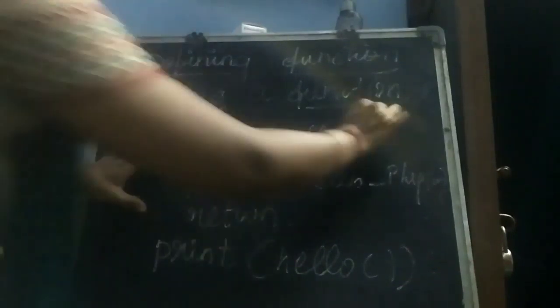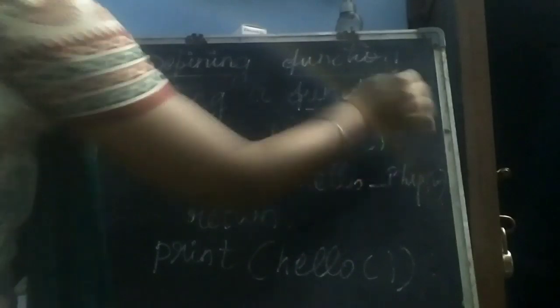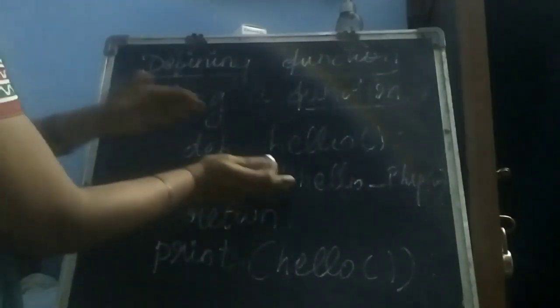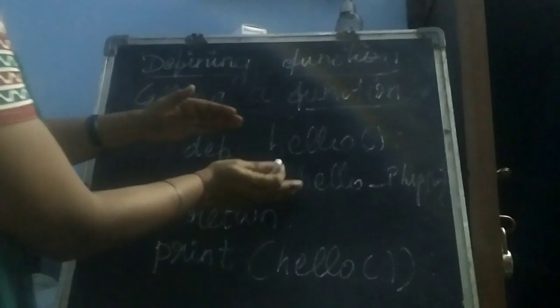This is the procedure for calling a function. I am creating a function, and in the function I write one print statement — that is the block of statements. In the `hello` function, I am printing, so the output is automatically 'Hello Python'.